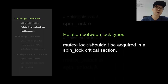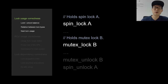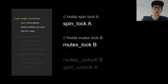Mutex lock shouldn't be acquired in a spinlock critical section. This code tried to acquire mutex lock B with spinlock A held, which is problematic, so LockDev would report it as a problem. I'll assume all of you are familiar with mutex lock usage and will not explain lock usage in detail.